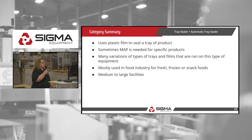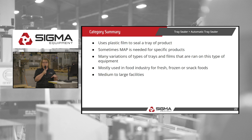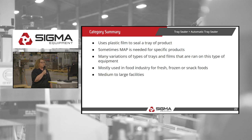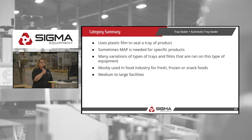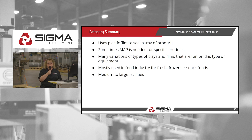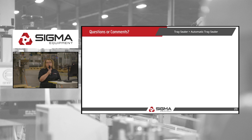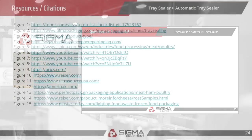In summary, the basic principle is a tray filled with product goes through the machine to have film sealed on top, sometimes using a MAP system for specific products to help with freshness. There are lots of variations of tray sizes, types, shapes, and film. It's mostly used in the food industry for fresh, frozen, or snack foods, primarily in medium to large facilities. Any questions or comments?